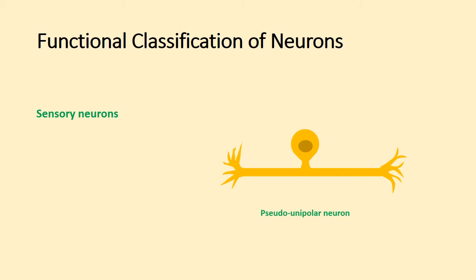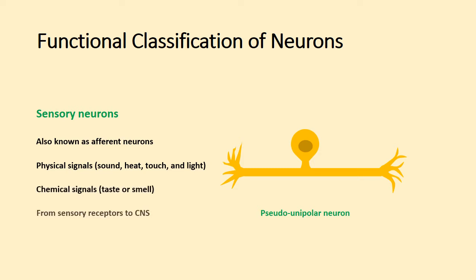Sensory neurons, also called afferent neurons, transmit physical or chemical signals from sensory receptors to the central nervous system.